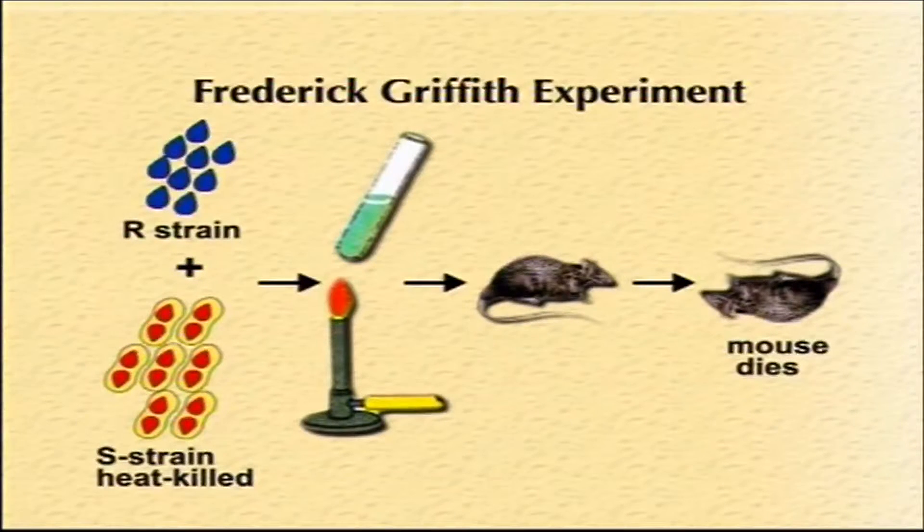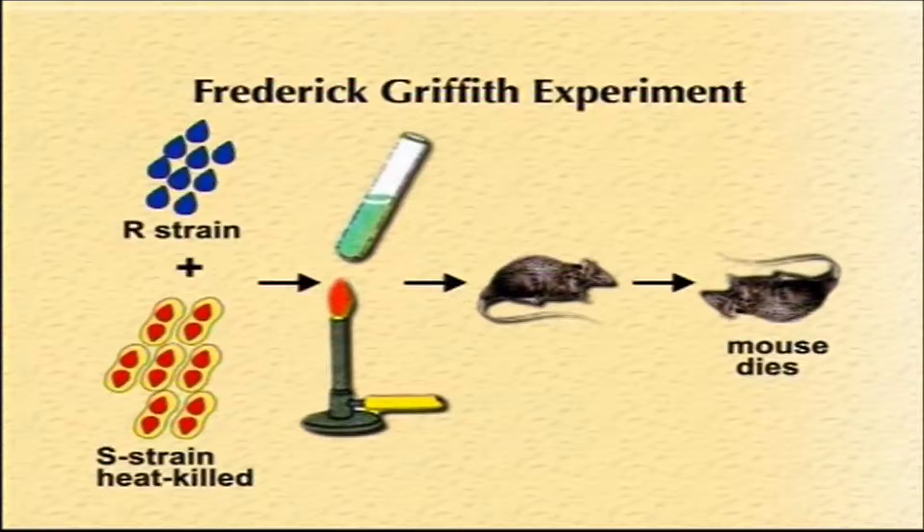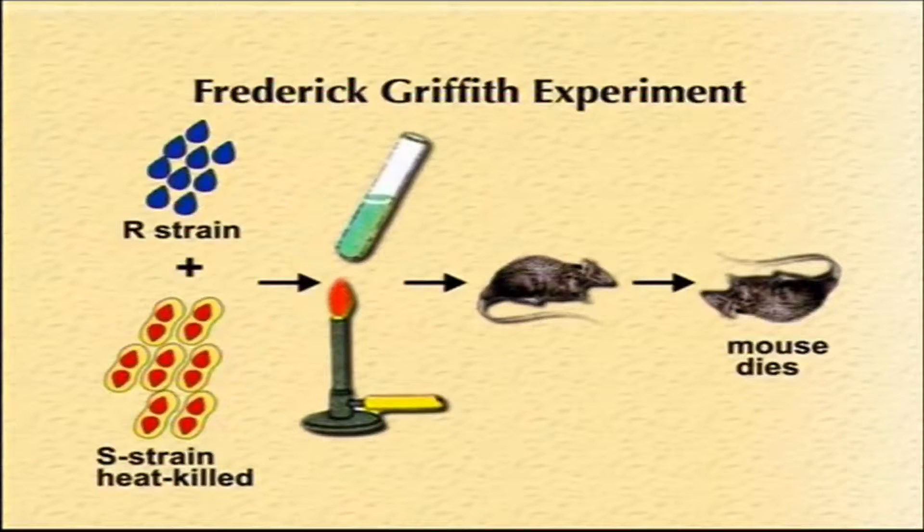The question is: why did the mouse die when injected with a mixture of heat-killed S strain and live R strain? The reason is that the heat-killed S strain somehow transforms the R strain into a virulent one. The first three experiments serve as controls for this last demonstration showing transformation.